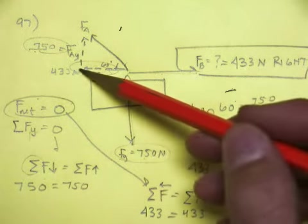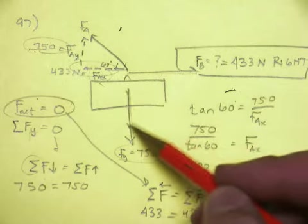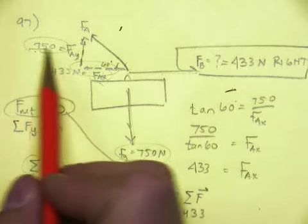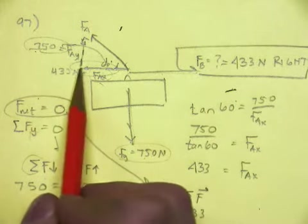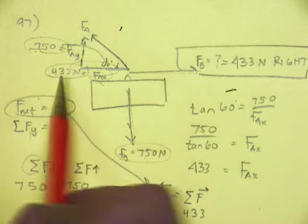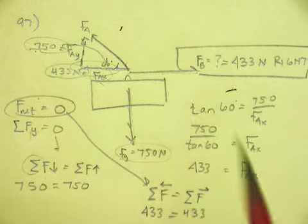Everything that pulls down equals everything that pulls up. 750 equals 750. And then, by the law, by sine and cosine, you can find this piece. So that means it's also pulling to the left at 433. Well, this has to pull to the right at 433 to balance that.